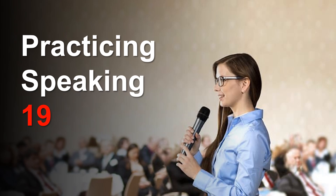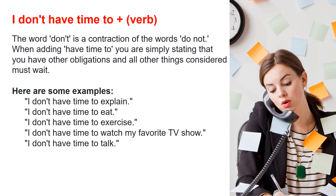Practicing speaking number 19. I don't have time to plus verb. The word 'don't' is a contraction of the word 'do not.' When adding 'have time to,' you are simply stating that you have other obligations and other things to consider.